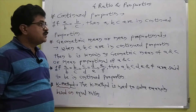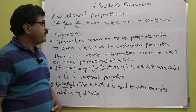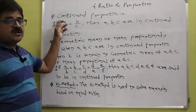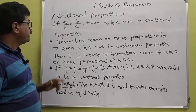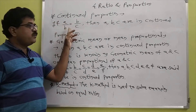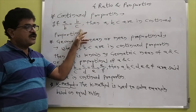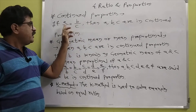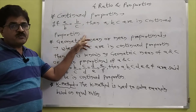Hello students. Today we are going to learn the next point, that is continued proportion. If A upon B is equal to B upon C, then A, B, C are in continued proportion.